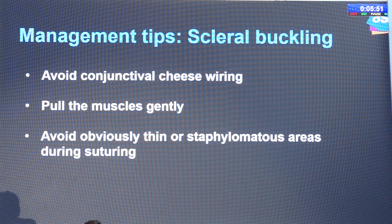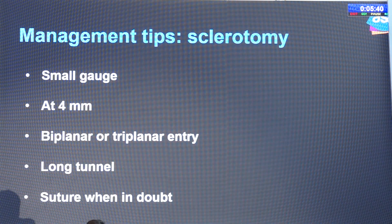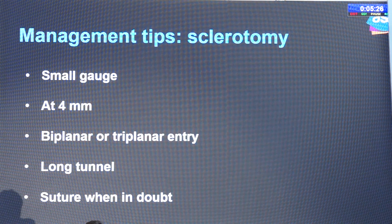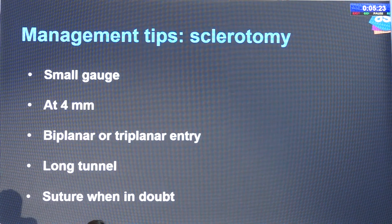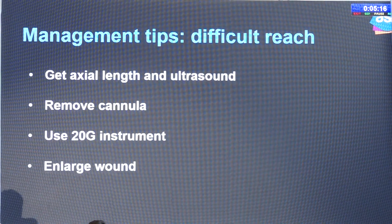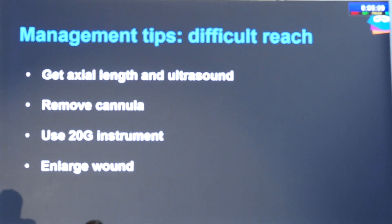In buckling, try to hold the conjunctiva with non-toothed forceps and avoid cauterizing. Pull the muscles gently and avoid obviously thin areas or staphyloma areas while passing the needle. In sclerotomy, we are using small gauge — 25 gauge. You can place the port a little posterior to the limbus because the ora is a little posterior, and the entry may be biplanar or triplanar. A longer tunnel entry will help heal the sclerotomy. If it is leaking or there is doubt, definitely suture with 7-0 vicryl. You can ascertain difficulties beforehand by getting the axial length, which also helps because these cases will most likely need cataract surgery later. Ultrasound helps you know the anatomy of the posterior staphyloma.